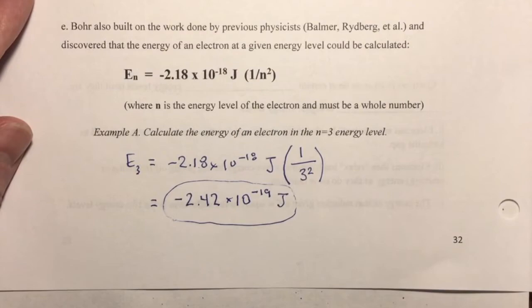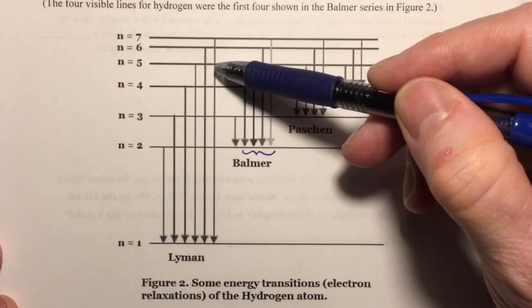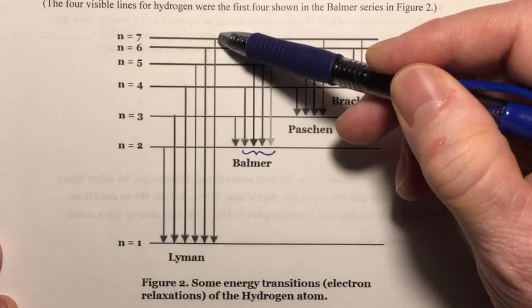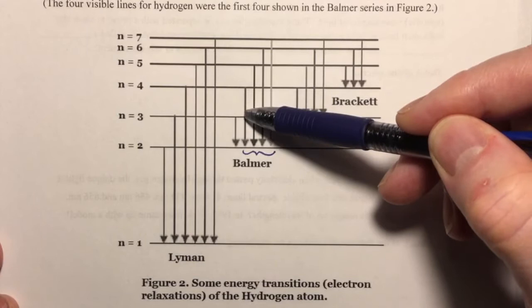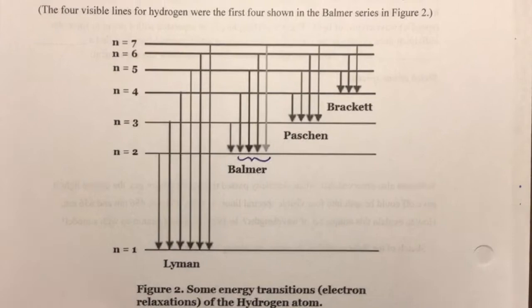Moving on, we are now going to be able to calculate the energy differences between energy levels. If we can calculate the energy of an electron in one state and subtract the energy in another state, then we can calculate the energy difference — and that energy difference is the energy that is going to be emitted as electromagnetic radiation. We will then be able to calculate the energy emitted from the atom and, using equations we've already learned, convert that energy into a frequency or wavelength.